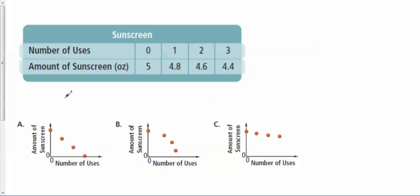They have the x-axis as the number of uses and the y-axis as the amount of sunscreen. If you were to plot these, you got 0 comma 5 ounces, then you have 1 comma 4.8, then 2 comma 4.6, and then 3 comma 4.4. So if you look at this, you have to think, is it a constant difference? If you subtract 5 and 4.8 you get 0.2. If you subtract 4.8 from 4.6 you get 0.2. If you subtract 4.6 and 4.4 you get 0.2.